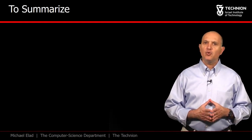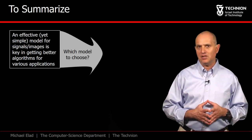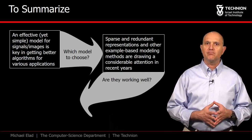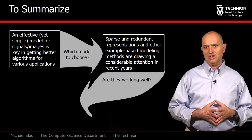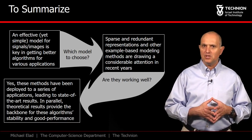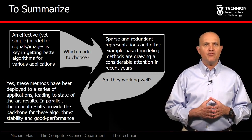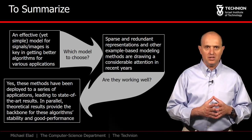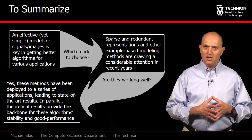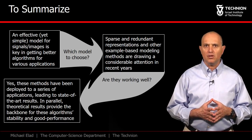It is time to wrap up. We discussed the importance of models for handling various tasks in signal and image processing, and offered a model relying on sparse and redundant representations. We have shown how this model can be used for a series of tasks, leading to amazing results. Note that we have not explained how the model is used to achieve these results — this, along with the theoretical foundations of the model, will be thoroughly described in this course.